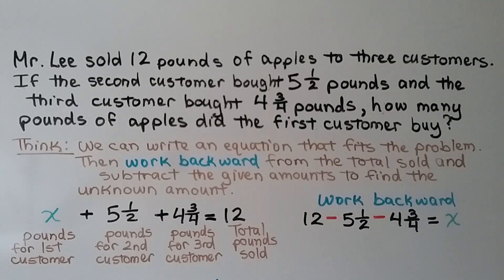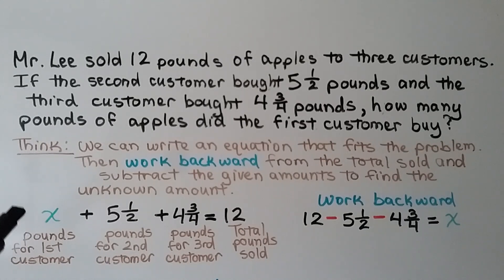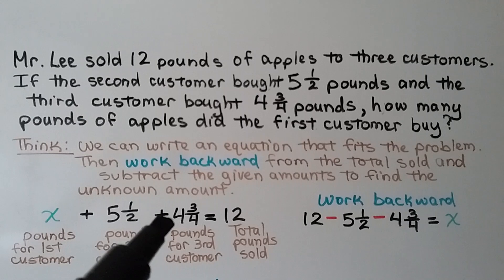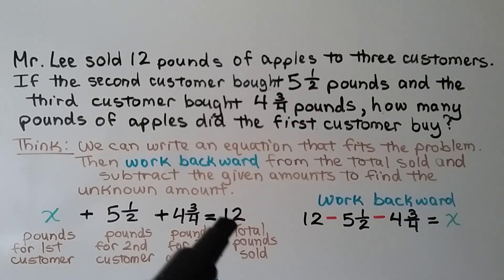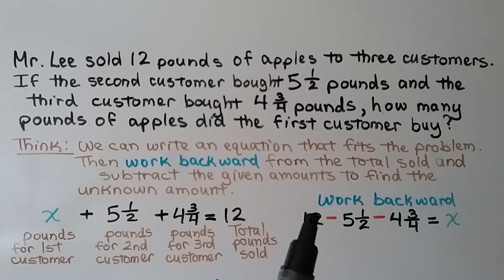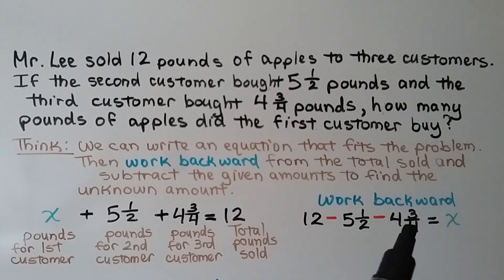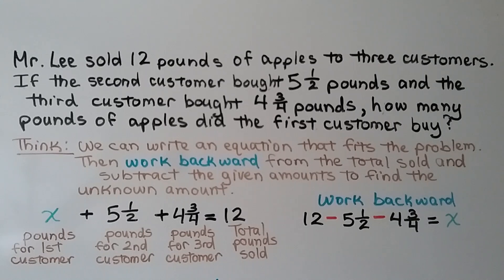Mr. Lee sold 12 pounds of apples to three customers. If the second customer bought 5 and a half pounds and the third customer bought 4 and 3 fourths pounds, how many pounds of apples did the first customer buy? We can write an equation that fits the problem, then work backward from the total sold and subtract the given amounts to find the unknown amount. We use the variable x for the pounds for the first customer. x plus 5 and a half plus 4 and 3 fourths equals 12.